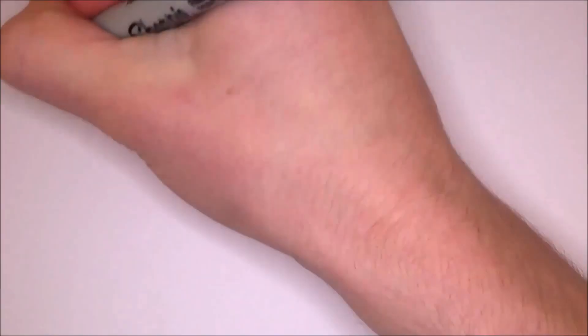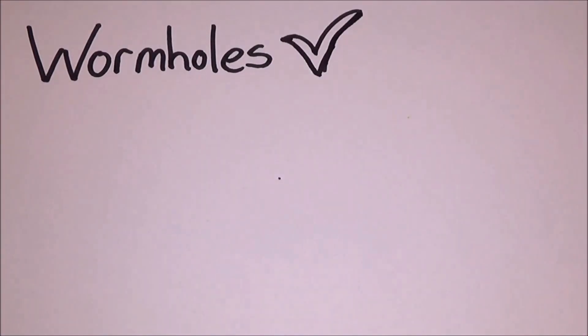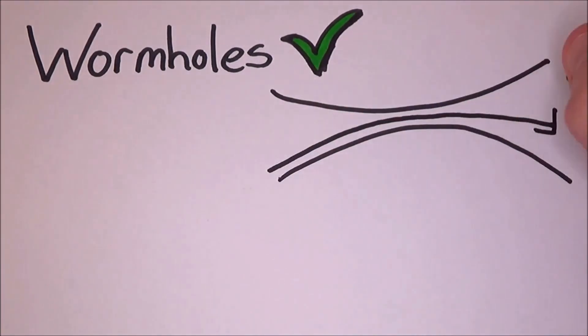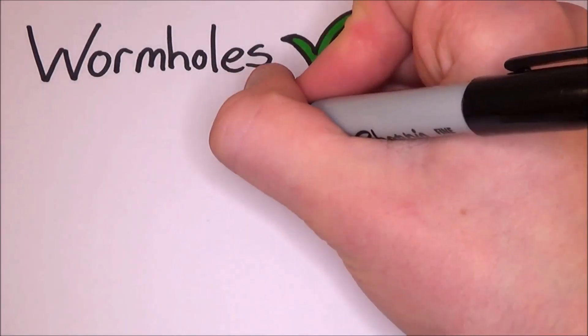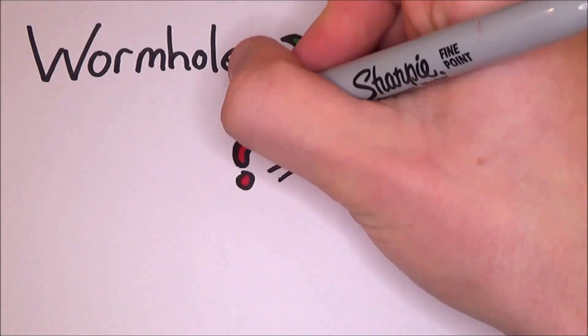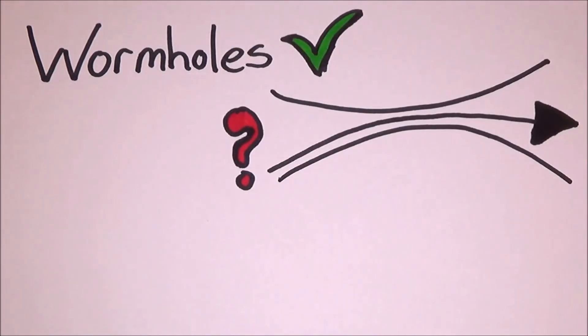Now, there is an equation in string theory that predicts and allows wormholes to exist. The only question is, how practical is it to go through a wormhole? Truth is, we don't know. Many physicists are suggesting ideas about whether it is physically possible to put someone or something through a wormhole. If you could, you could effectively use this like a time machine.